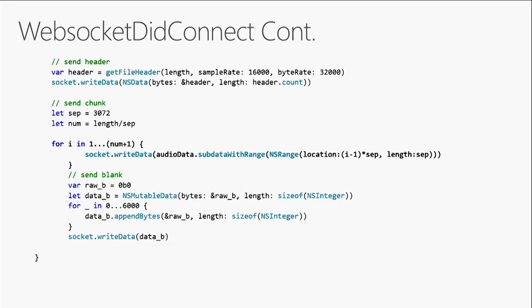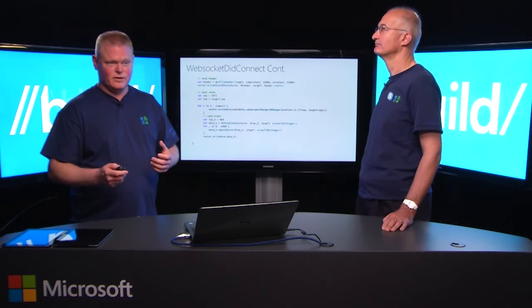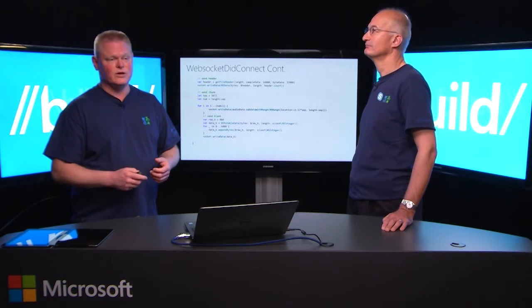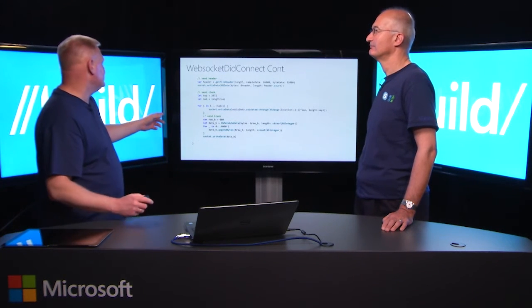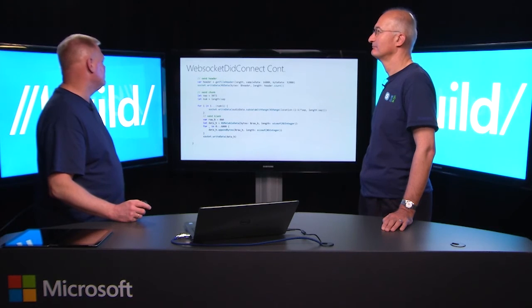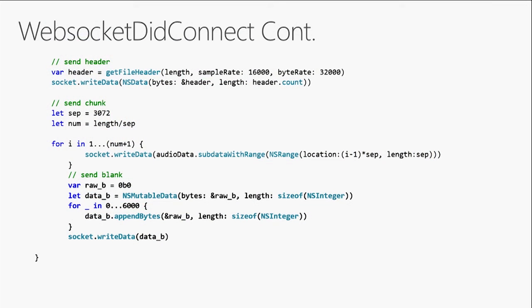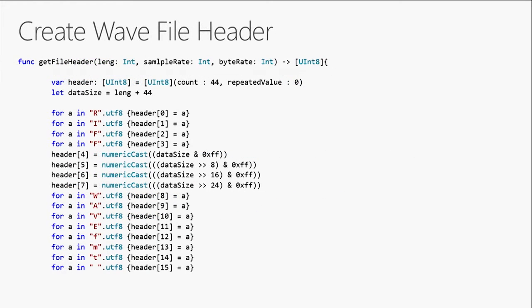At this point, we start getting data back from the service. There's one thing we need to do to let the system know we're done talking — the audio is done. There's a concept of an utterance, and we need to know when the utterance stops. To do that, we send about two seconds of silence to let the service know it can go ahead and start processing because we're done talking, and then we write that to the service.